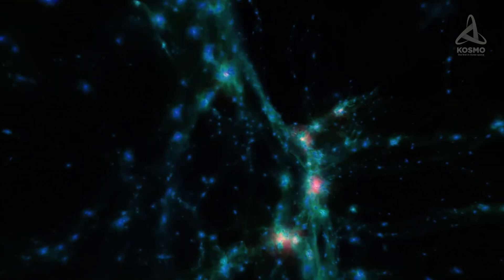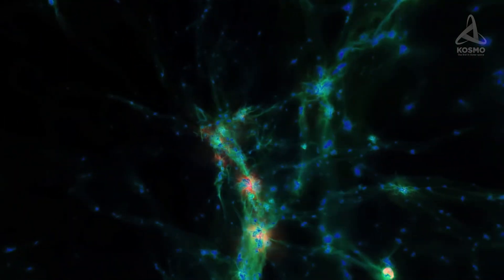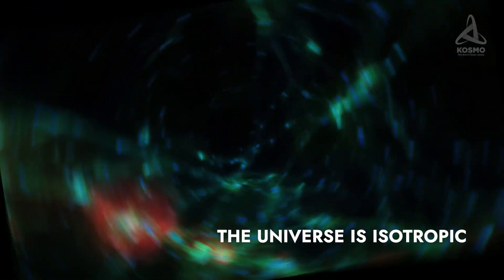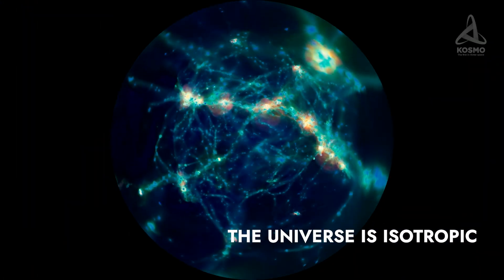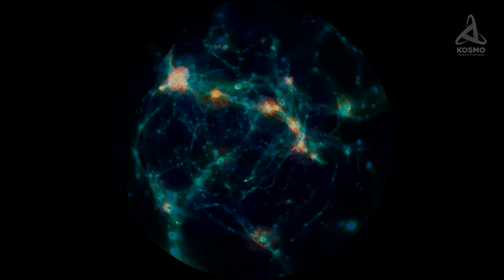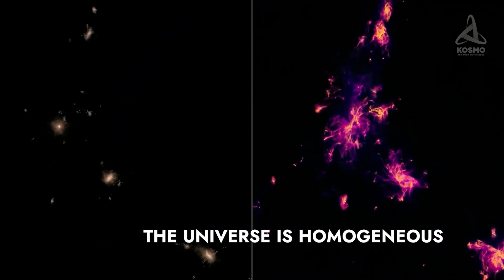There are two basic principles regular cosmological models are based on. The universe is isotropic, that is, it has been developing in all directions and must have a spherical shape if any at all. And it is homogeneous, that is, it has no directions or shape.